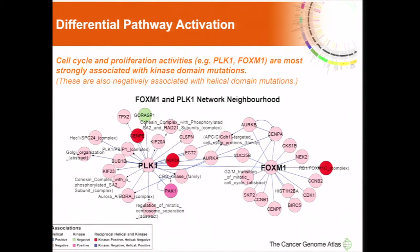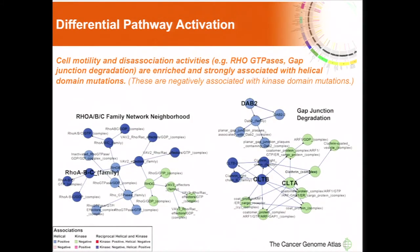Asking what distinguished kinase domain mutations from helical domain mutations in other areas, we first turned to cell cycle and proliferation activities. These were featured by the polo-like kinase 1 and FOXM1 hubs, which were most strongly associated with kinase domain mutations — red and pink virtually everywhere — and negatively associated with helical domain mutations. For helical domain mutations we see very different pathway enrichments: the Rho-GTPase families and gap junction degradation as hubs were most strongly associated with helical domain mutations and negatively associated with kinase domain mutations.